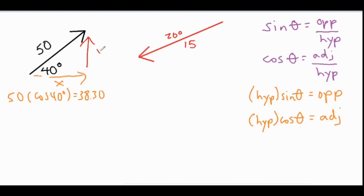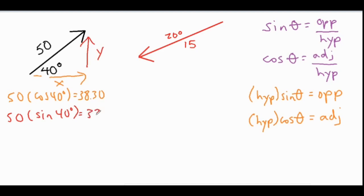For our y component we're going to do something very similar except we're going to use sine, because sine gives us the opposite side from that 40 degree angle. So we do 50 times the sine of 40 degrees and that gives us 32.14.